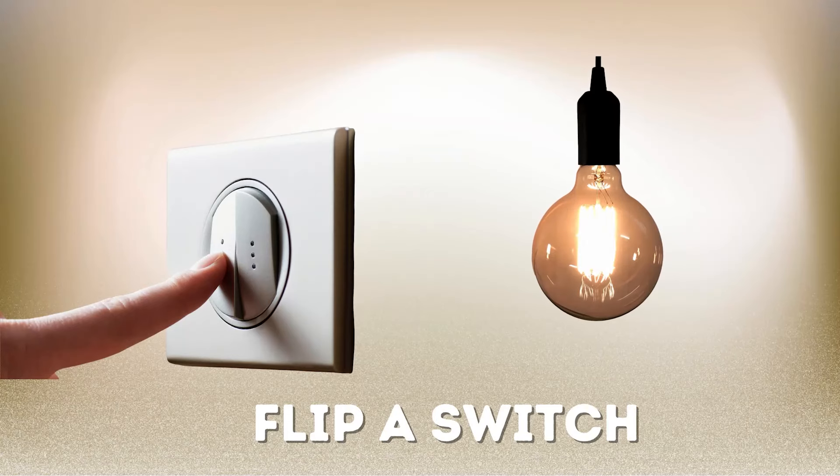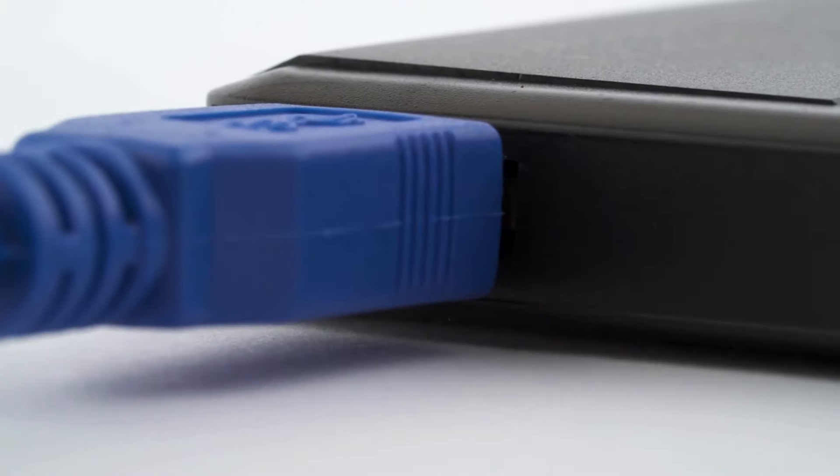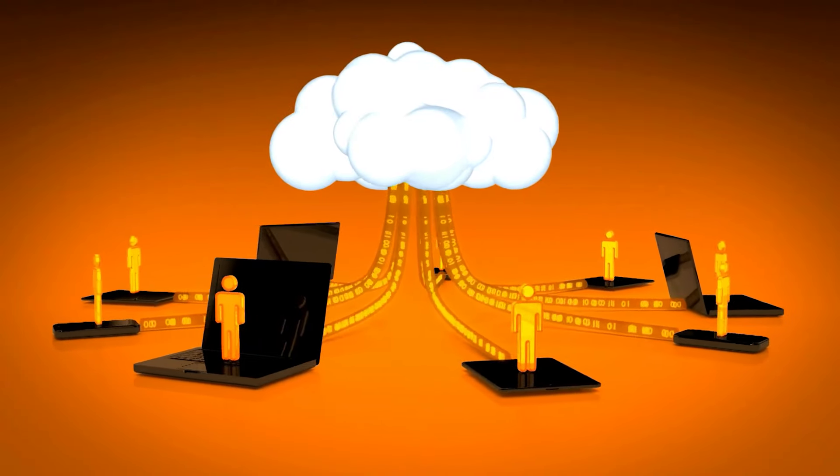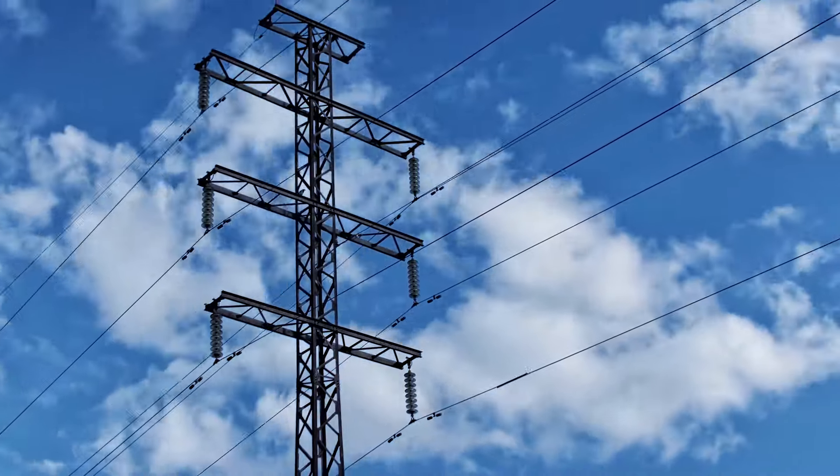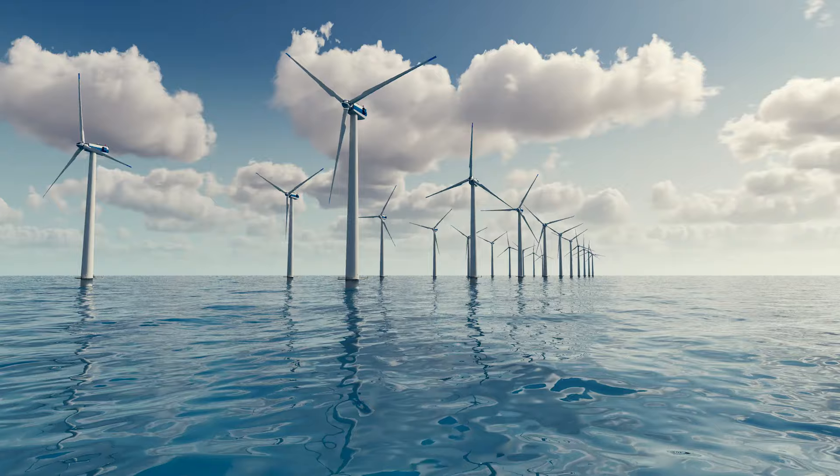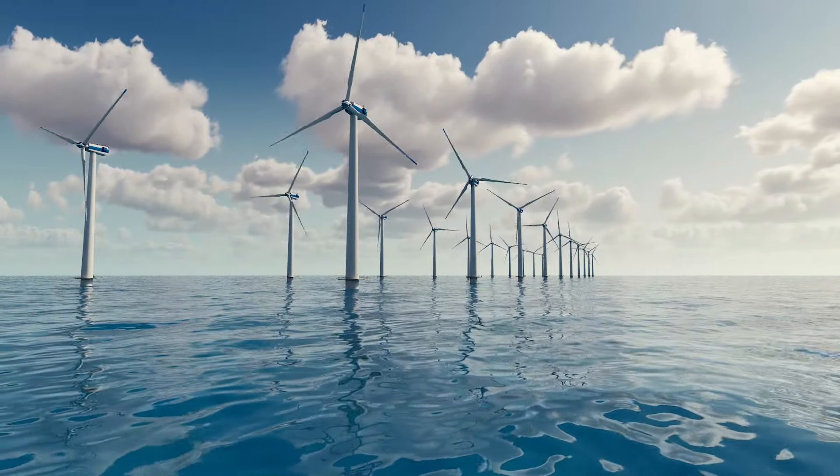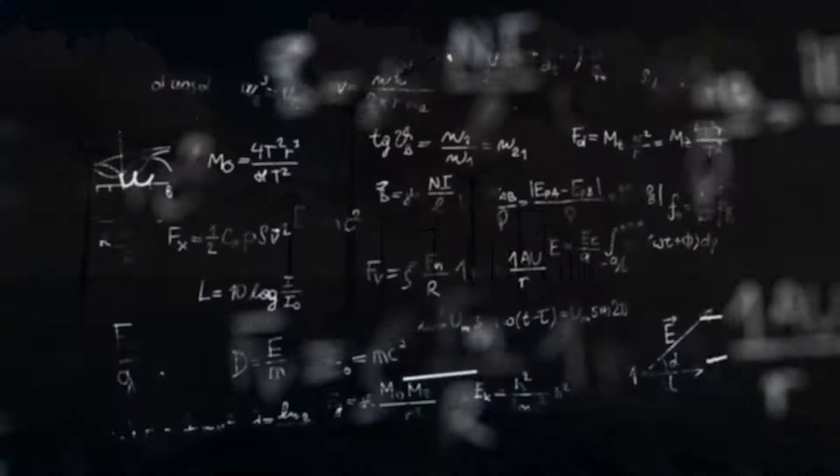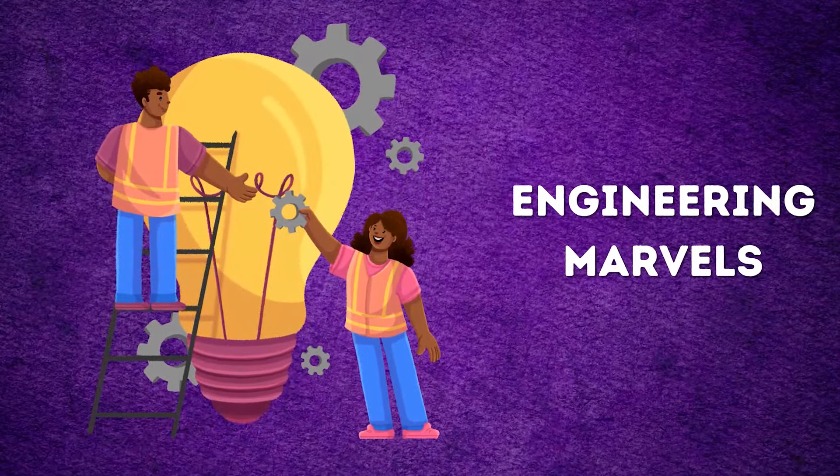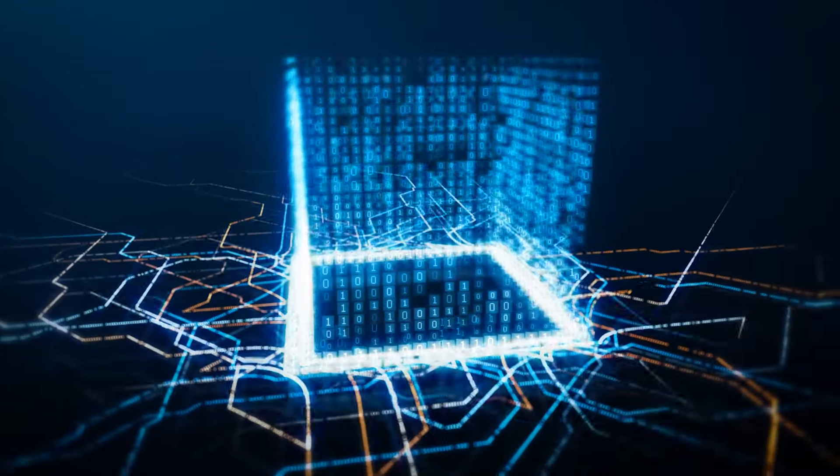As electricity finally arrives at your home it's ready to serve your needs. Flip a switch and the lights come on, plug in your devices and they start charging. All of this is made possible by the intricate physics behind electricity transmission. Now when you turn on a light or power up your gadgets you will have a deeper appreciation for the incredible journey that electricity has undergone. The interplay of physics principles and engineering marvels has created a seamless and reliable system that powers our daily lives.